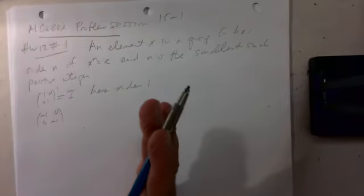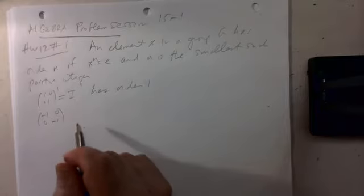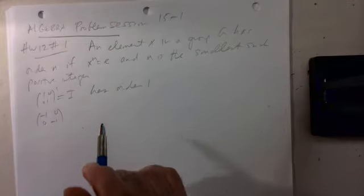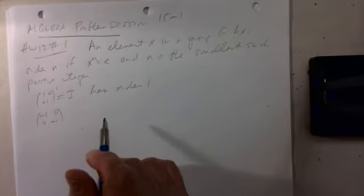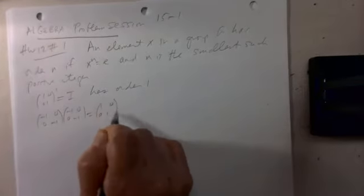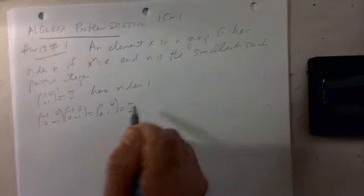This matrix minus one zero zero minus one is not the identity, so I square it, and when I square it I get the identity. So this has order two.